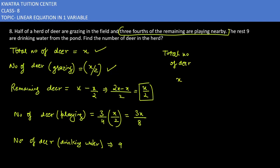Some of the herd are grazing, some of the remaining are playing, and some are drinking water. We are doing three tasks: grazing, playing, and drinking water. How many are grazing? x by 2. How many are playing? 3x by 8. And how many are drinking water? 9.